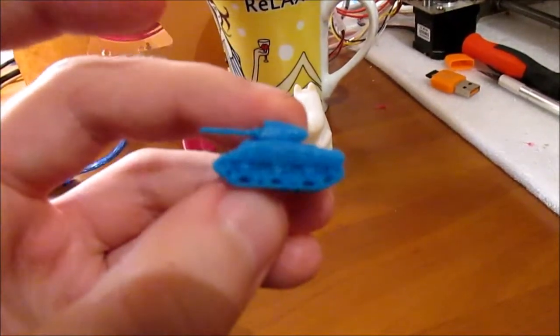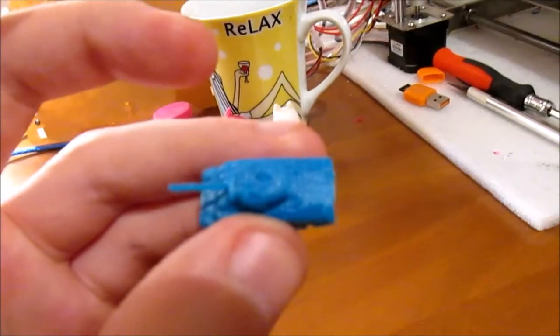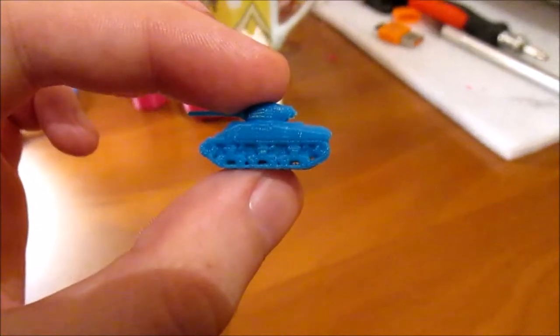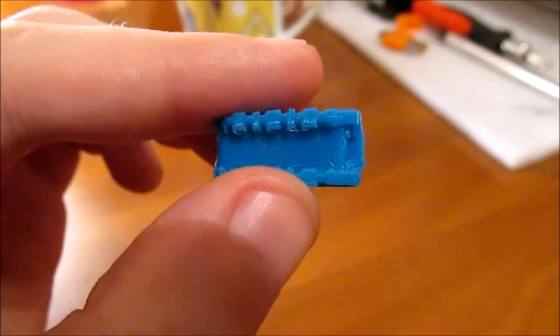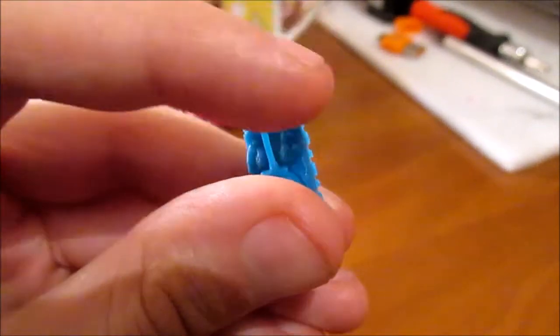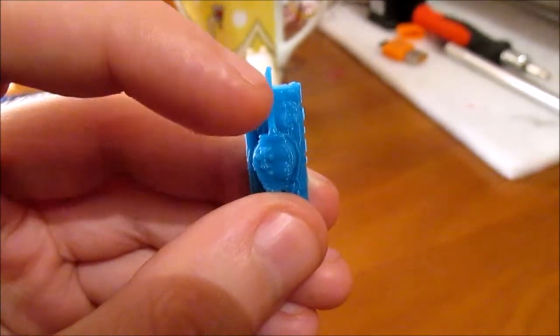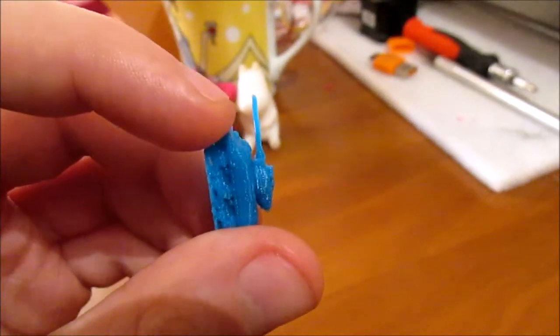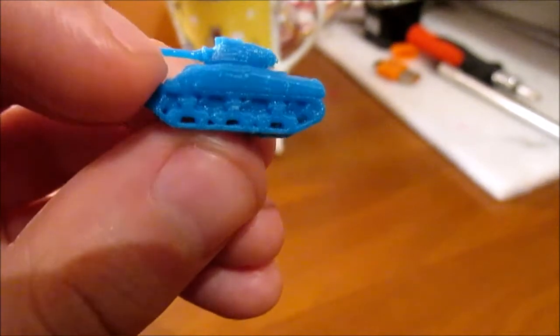And the ZoneStar can also print things, for example, like this, which is a nice little tank. I got off a thing of verse. And the details on here are really nice. And you can see all the different parts on it. And if you notice, this barrel is really small. I mean, it was printed vertically, and there are no defects here on the sides of the barrel. I was able to print that completely vertical like that. So I'd say that's pretty impressive from a $200 printer.